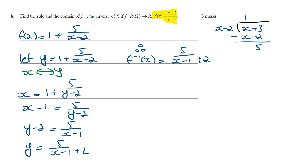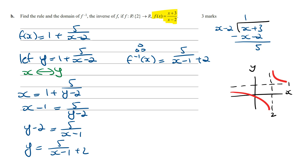The domain of f inverse equals the range of f of x. To find the range of f of x it's best to sketch its graph. f of x is a positive hyperbola translated one unit up and two units to the right. The range of this graph is all real numbers except 1. Therefore the domain of f inverse is all real x values except x equals 1.